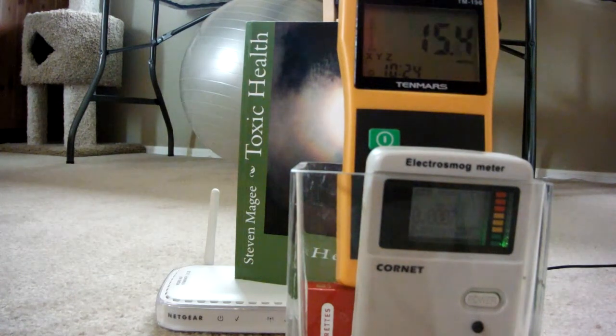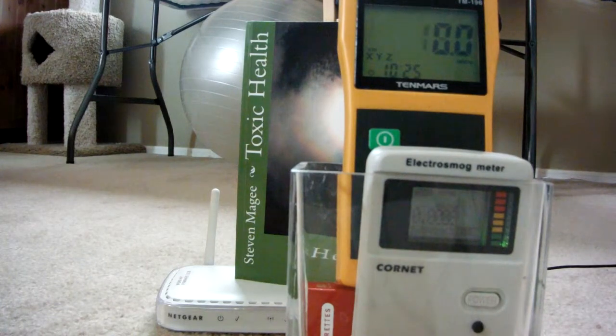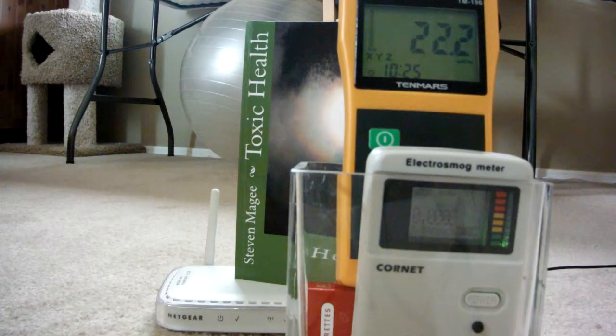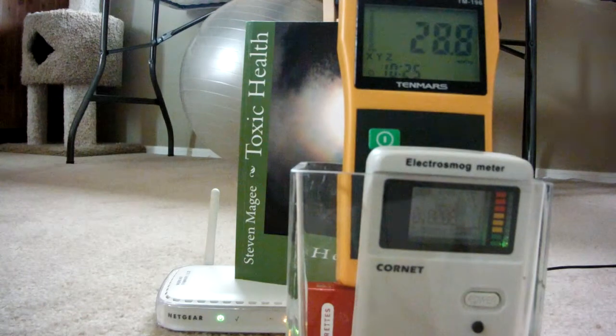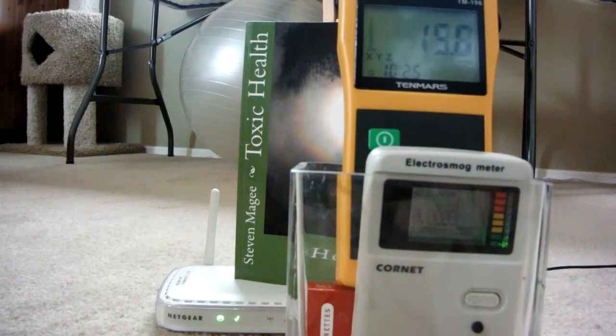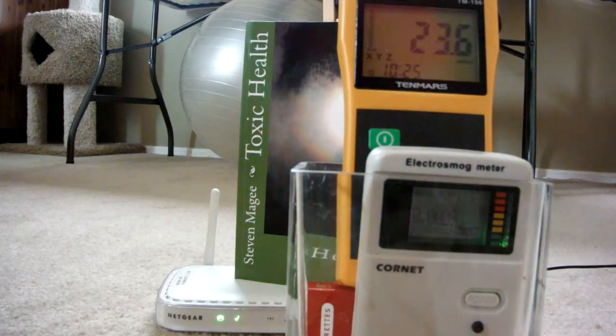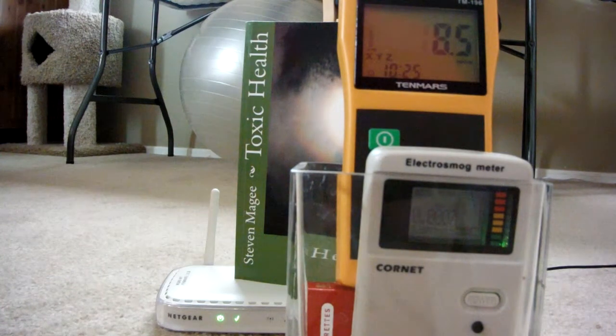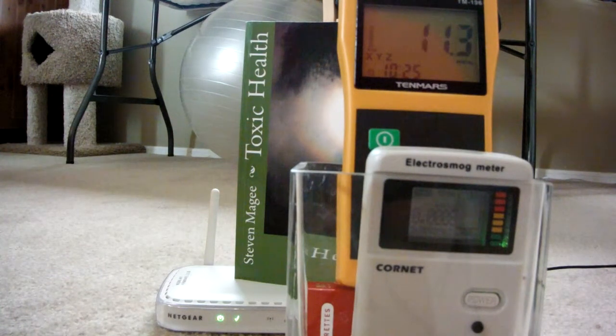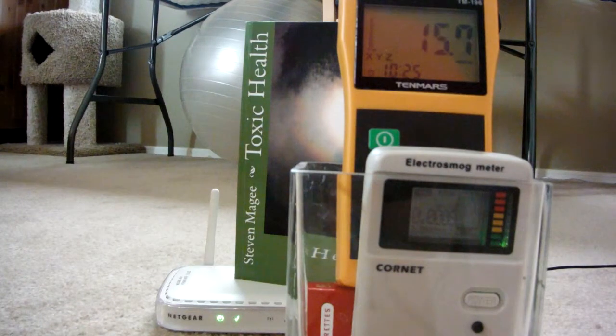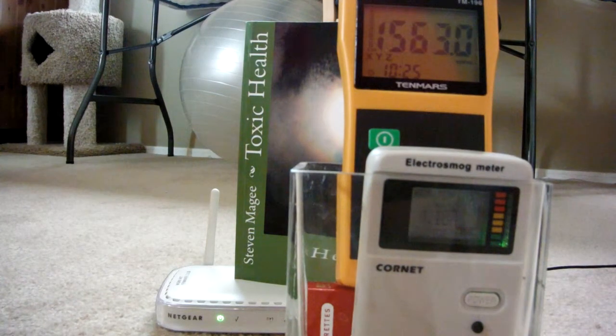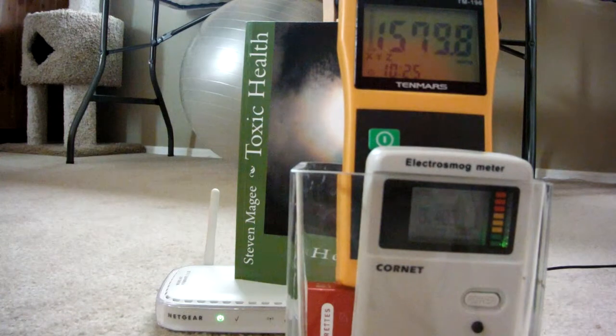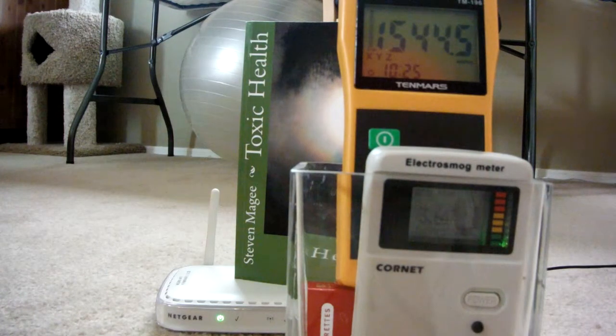I'm going to turn on the wireless router and we should see our radiation levels spike up. The wireless router is now plugged in and in a few seconds we should see the wireless network come on and we should see a surge on the radiation levels that matches that. The wireless network has just switched on and we now have our meter readings.